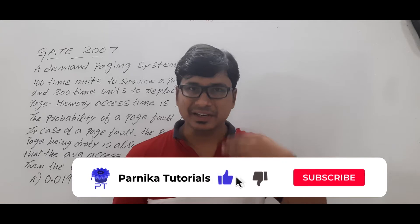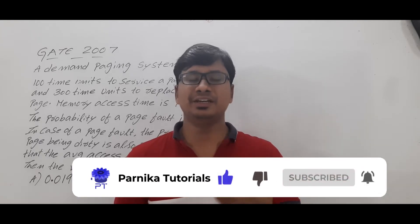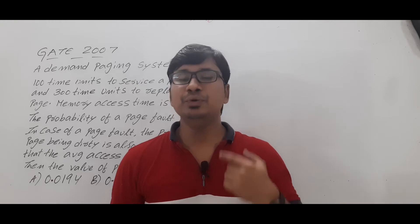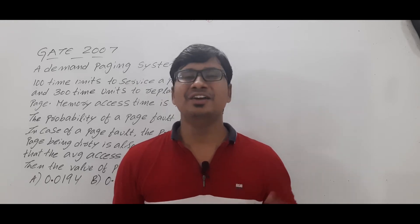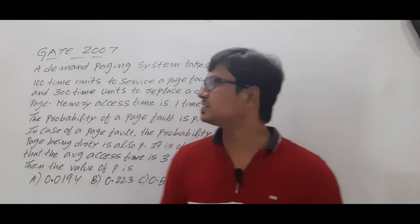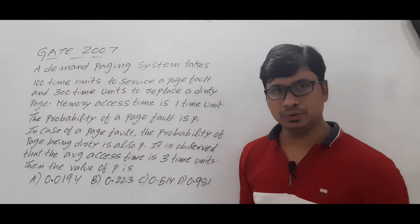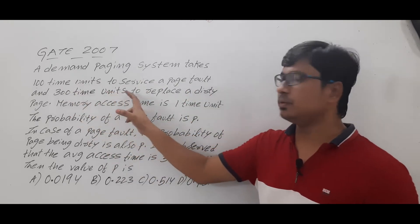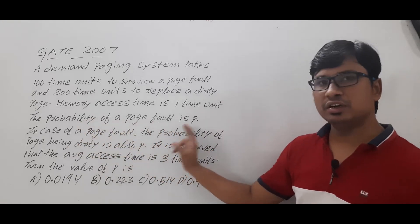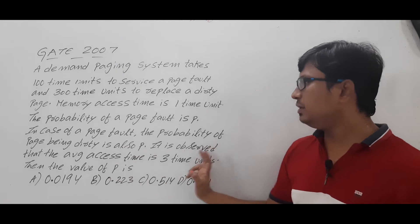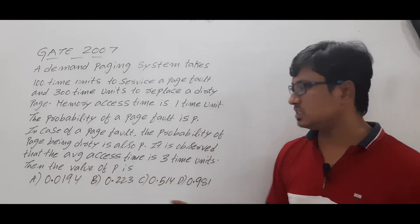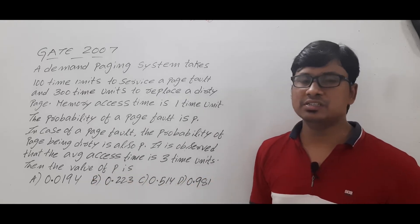Good morning friends, welcome back to Panika Tutorials. In this video I want to discuss one of the GATE questions which came in the year 2007, related to effective memory access time. These kinds of questions will help you to understand the concept in a better way. A demand paging system takes 100 time units to service a page fault and 300 time units to replace a dirty page. Memory access time is one time unit. The probability of a page fault is P, and in case of a page fault, the probability of the page being dirty is also P. It is observed that the average access time is 3 time units. We need to find the value of P.